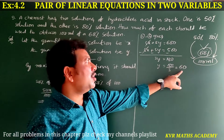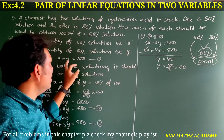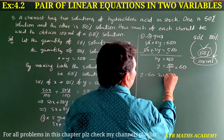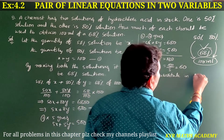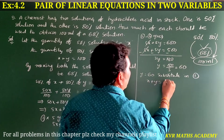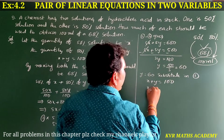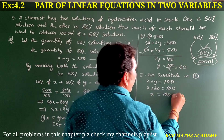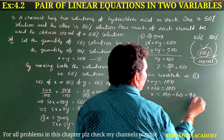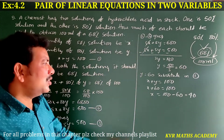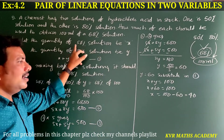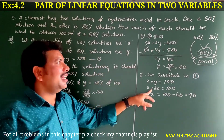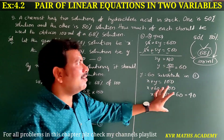The quantity of 80% solution should be 60 ml. Substituting Y equals 60 into equation number 1: X plus 60 equals 100, so X equals 100 minus 60, which is 40. Therefore X equals 40. So we should add 40 ml of 50% solution and 60 ml of 80% solution.